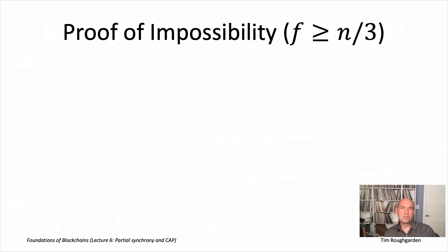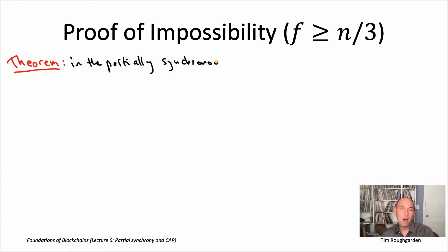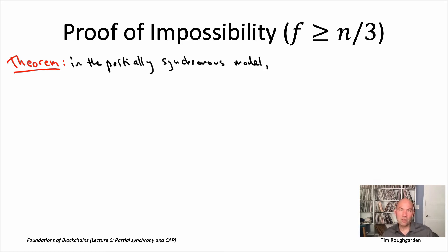In this video I want to actually provide you with a rigorous proof of this very famous impossibility result. We're talking about the partially synchronous model — an asynchronous phase followed by a synchronous phase. There are two parameters: a known bound capital delta on the maximum message delay once you reach the synchronous phase, and the second unknown parameter GST, global stabilization time. At some finite time, the protocol doesn't know when, there will be a transition from the asynchronous to the synchronous phase. In this model, the magic threshold is 33%, so we're going to get an impossibility result if a third or more of the nodes are Byzantine.